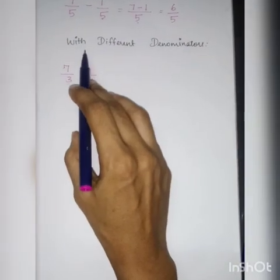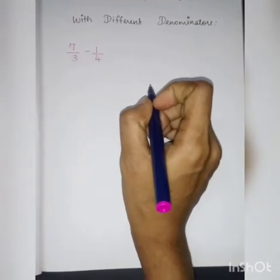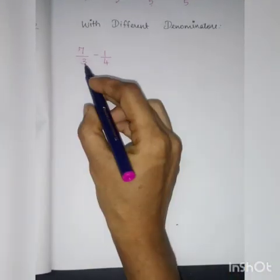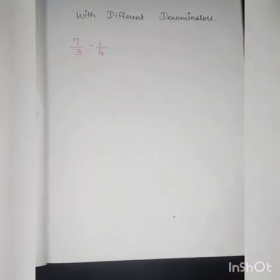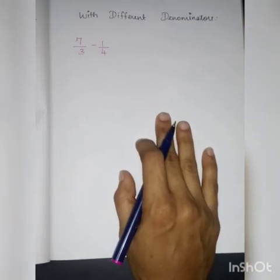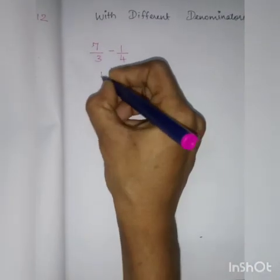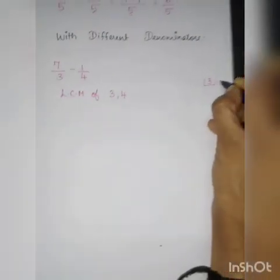Now we are going to do subtraction with different denominators: 7 by 3 minus 1 by 4. Here, both denominators are different. As both denominators are different, our task is to make both the same. We will use LCM to make both denominators equal. So we find the LCM of 3 and 4.